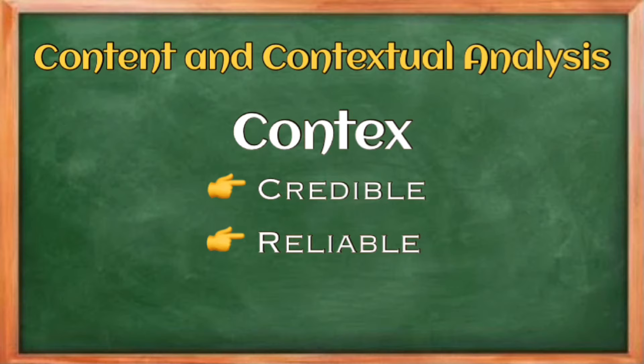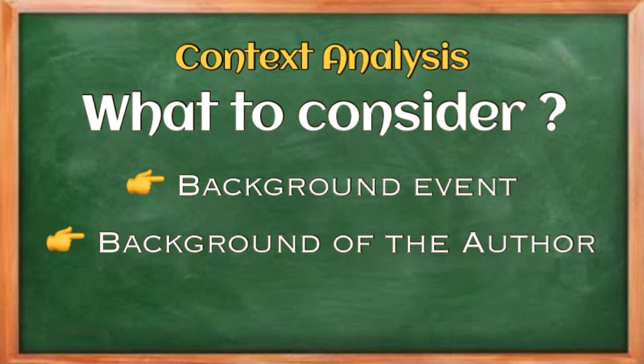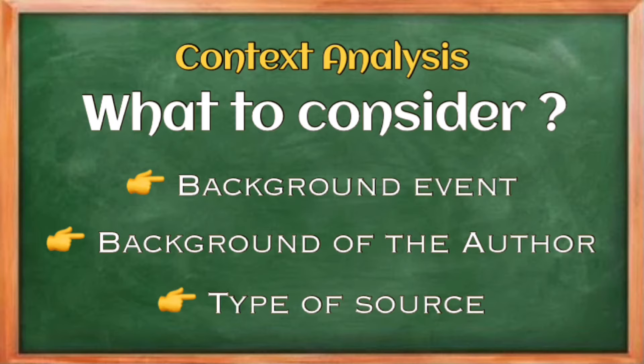Context must be credible, reliable, and trustworthy. The things to consider in context analysis are: the background of the event, the background of the author, and the type of source. We need to know the background of the event and the author in order to know if the author is credible enough and whether he was present or witnessed the said event. We also need to know what type of source it is — whether a novel, speech, or diary — so that we can give more emphasis on the context that we are going to read.